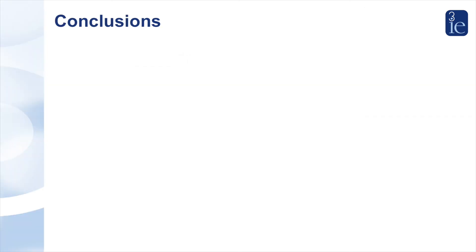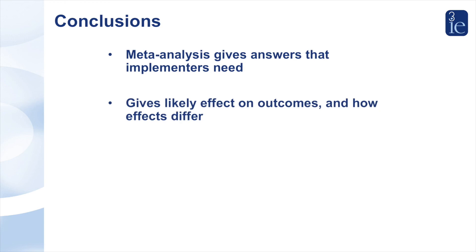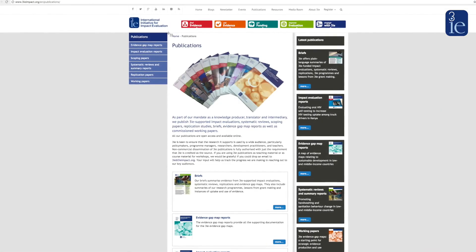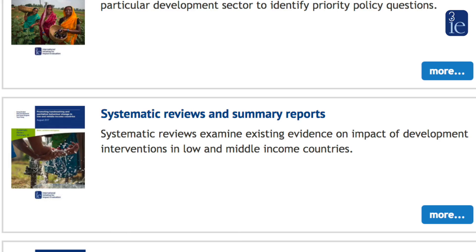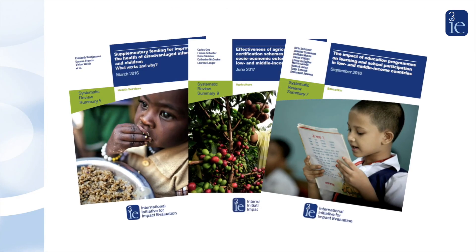To conclude, meta-analysis gives answers that implementers need. It can tell us the likely effect of a program but also importantly how effects are likely to differ by context. It helps adjust for biases in individual studies and provides all of this evidence transparently, usually in technical reports. 3IE has done a lot of work to ensure that these technical reports are published in user-friendly, jargon-free formats in what we call systematic review summary reports, available from the 3IE website. Thank you for watching this video and stay tuned for more videos from 3IE on development effectiveness.